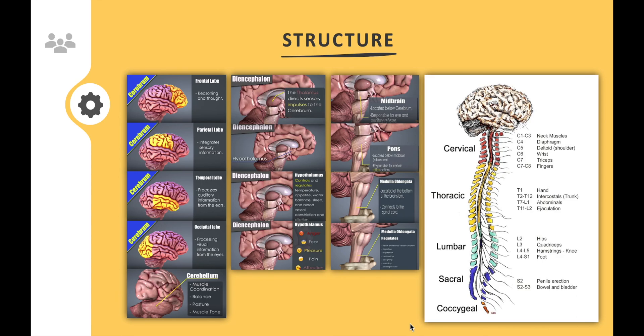Each part of the brain has a function of its own. The cerebrum is set up into four different parts: the frontal lobe, the parietal lobe, the temporal lobe, and the occipital lobe. The frontal lobe is associated with reasoning and thought. The parietal lobe is relevant to sensory information. The temporal lobe is related to hearing, and the occipital lobe is related to vision.